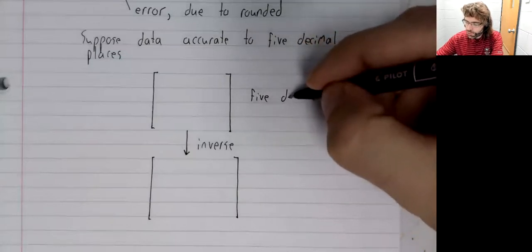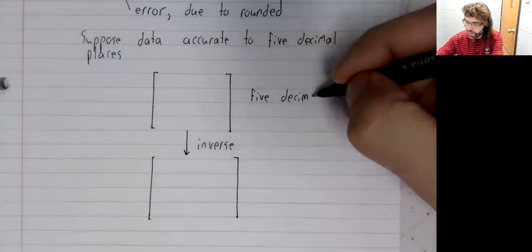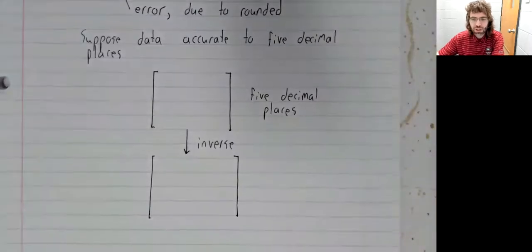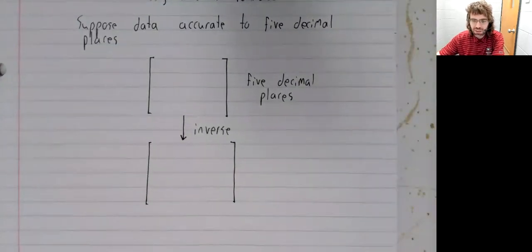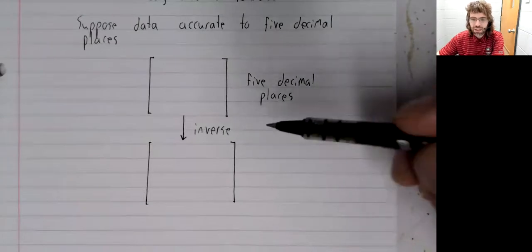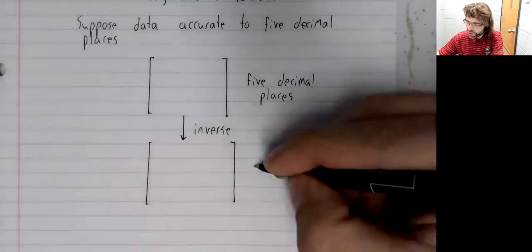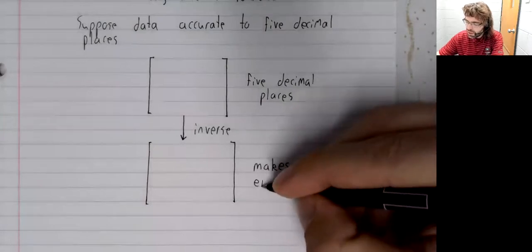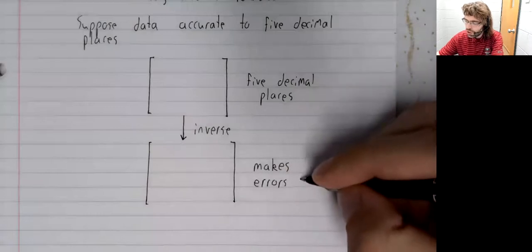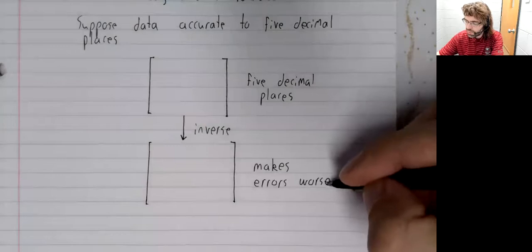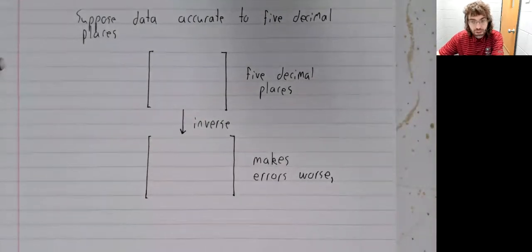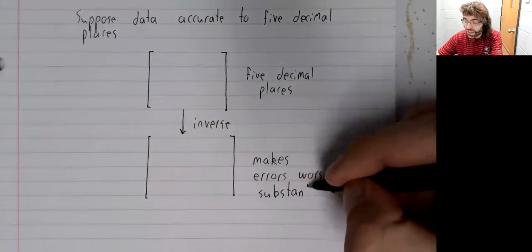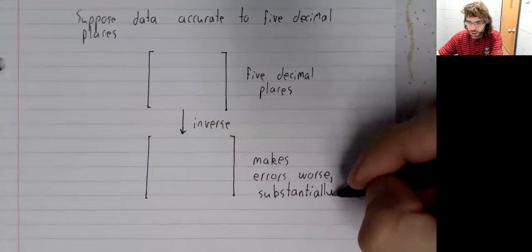Whereas our original data might have been accurate to five decimal places, the process of taking this inverse makes the errors worse. And sometimes it makes the errors substantially worse.